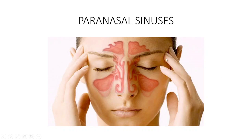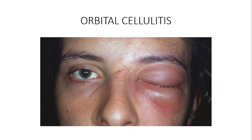We talked last week about the paranasal sinuses — the frontal sinuses, the ethmoidal sinuses, and the maxillary sinuses. Orbital cellulitis is the infection of the soft tissue within the orbital cavity, specifically posterior to the orbital septum. If the infection is anterior to the orbital septum, we call it preseptal cellulitis.